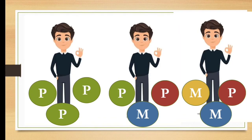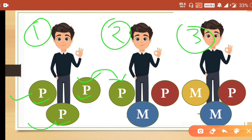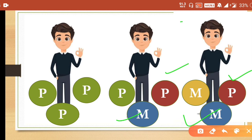Using a mnemonic: MEN1 has 3Ps — tumors of the pancreas, pituitary, and parathyroid. Parathyroid tumors are also common in MEN2. M stands for medullary carcinoma of the thyroid, and the differently colored P stands for pheochromocytoma, a tumor of the adrenal medulla. MEN3 has the same P and M (pheochromocytoma and medullary carcinoma of thyroid), plus an additional M for mucosal neuromas.